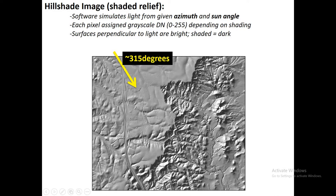In contrast, slopes that are facing directly into the sun — facing to the northwest — and are at the right angle, maybe at a complementary angle to your sun angle, so the sun is hitting them perpendicularly — those are the maximum illuminated slopes, and those have pixel values close to 255. They appear very bright in the display of the hillshade raster.